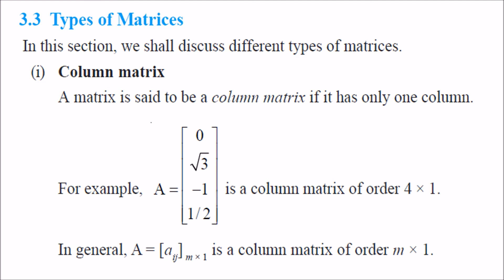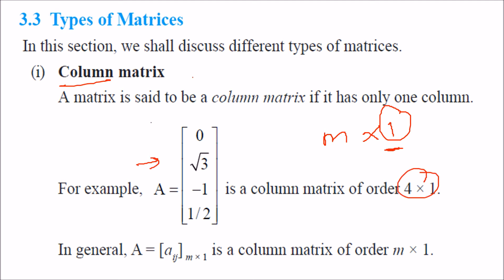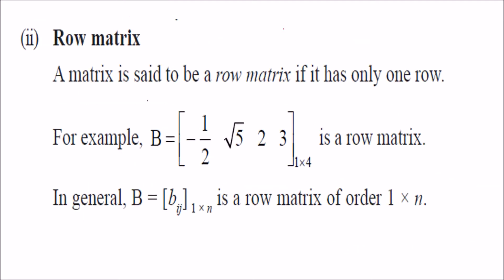Types of matrix: A column matrix has only one column — any number of rows but m × 1 form; for example a 4 × 1 matrix. A row matrix has only one row — 1 × n form; for example a 1 × 4 matrix.